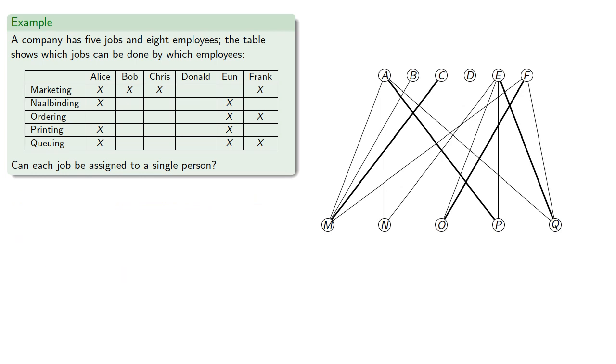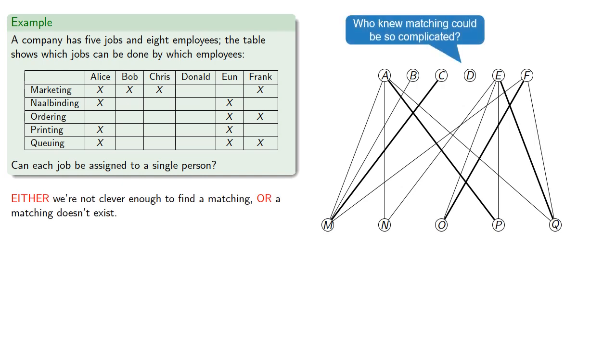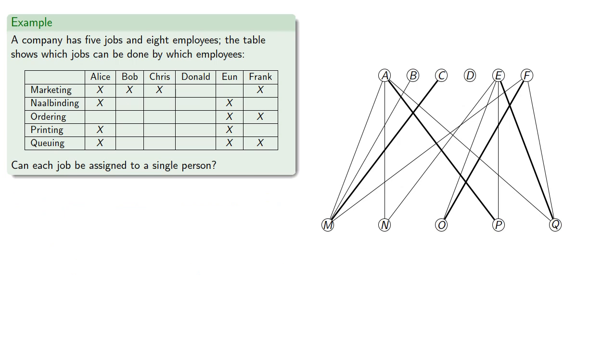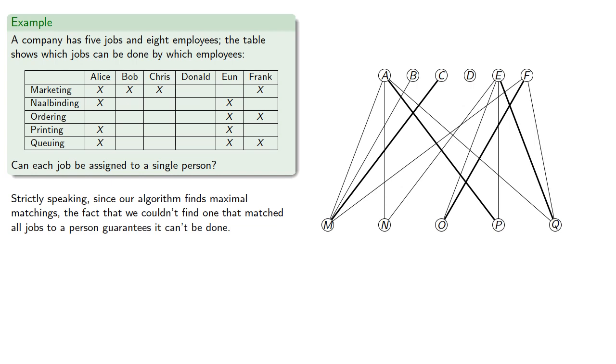So here's the thing to consider. Either we're not clever enough to find a matching, or a matching doesn't exist. So we could spend more time trying to find a matching, or we could find a reason why a matching is impossible to find. We'll note one important thing. Strictly speaking, since our algorithm finds maximal matchings, the fact that we couldn't find one that matched all jobs to a person guarantees it can't be done, but it doesn't tell us how to fix the problem.